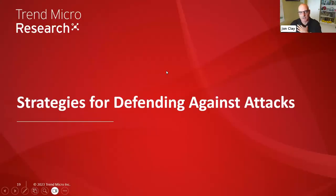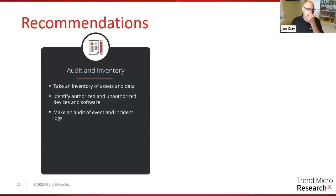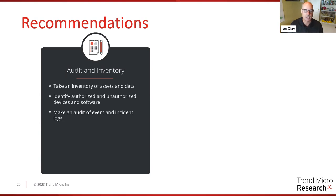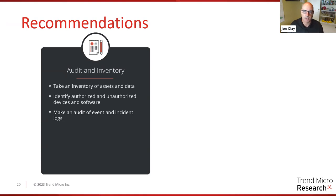Let's talk about strategies for defending. First, we definitely recommend audit and inventory — there was a high-risk question about not knowing the physical location of data. You need to do a discovery of your attack surface. Trend Micro's Vision One can do attack surface discovery for you. Take an inventory, identify authorized and unauthorized devices and software, audit your event and incident logs, and automate where possible. If you can't see it, you can't protect against it — you absolutely need to do an attack surface discovery.